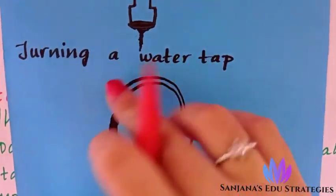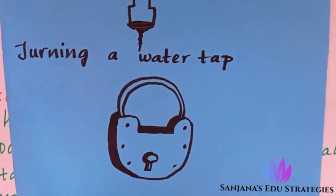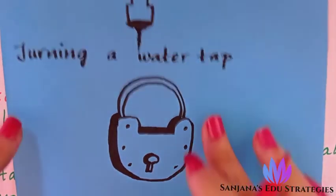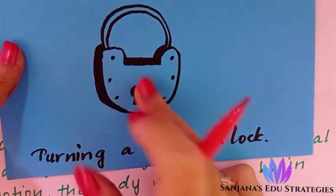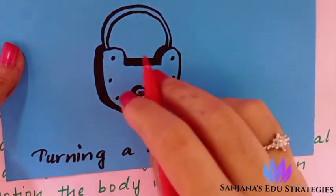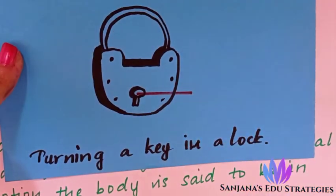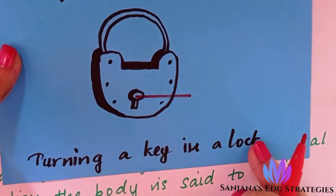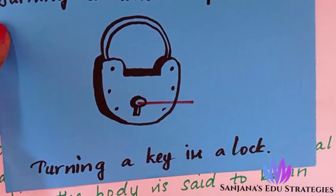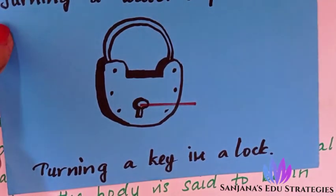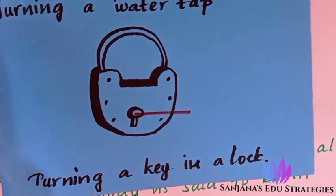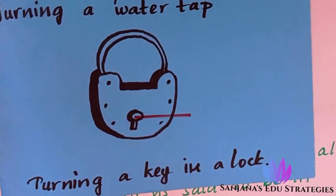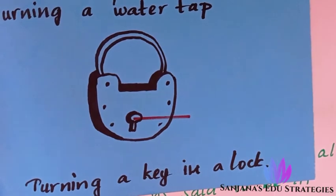Other examples of couple include: turning a water tap — you use two fingers applying force on two sides; turning a key in a lock — you apply forces to produce rotation; tightening the cap of a bottle; and turning a steering wheel while driving a car, where both hands apply force on two sides.